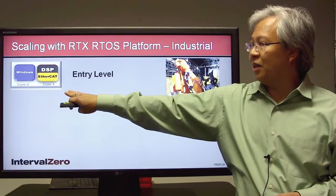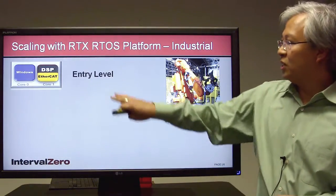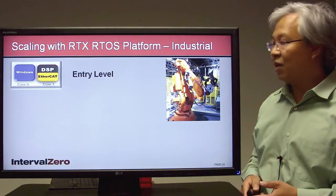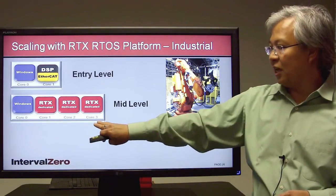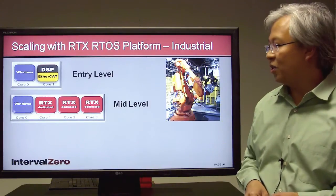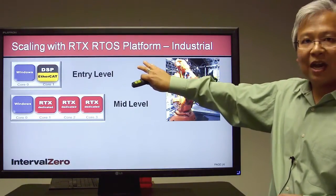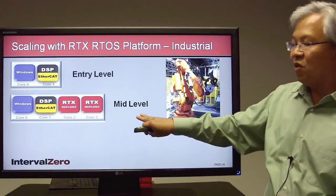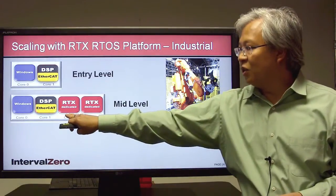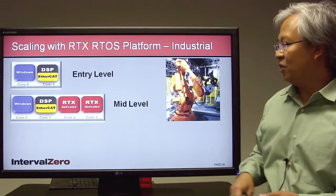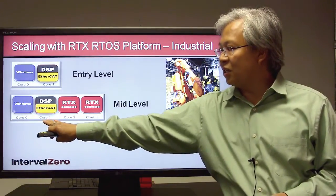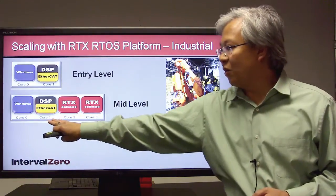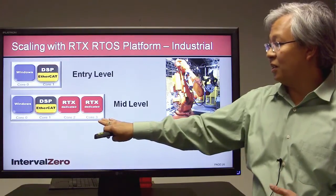We've talked in detail about the industrial example using a dual-core. Say we've built this entry-level system but now want to build a next-generation or higher-end system. You can get a commercial off-the-shelf board with a quad-core multi-core processor. The same application developed on the entry-level will seamlessly move over to the mid-level system, with two additional real-time cores available for processing. Because RTX supports symmetric multiprocessing, these three cores are all under a single scheduler, making integration and development very straightforward — and it's all under Visual Studio.